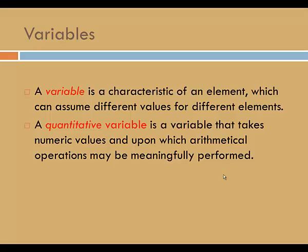A little bit of a review. A variable is a characteristic of an element which can assume different values for different elements. Variables are classified as qualitative or quantitative. A quantitative variable is a variable that takes numeric values and upon which arithmetical operations may be meaningfully performed. For example, an average should make sense.